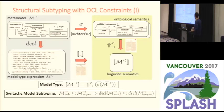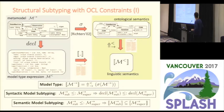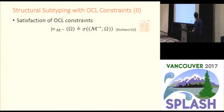Syntactic model subtyping in this context means: a metamodel defines a subtype of another metamodel if the model type expression for the first metamodel defines a subtype of the model type expression for the second metamodel. On a semantic level, we get subtyping by subsumption, as in Cardelli's work.